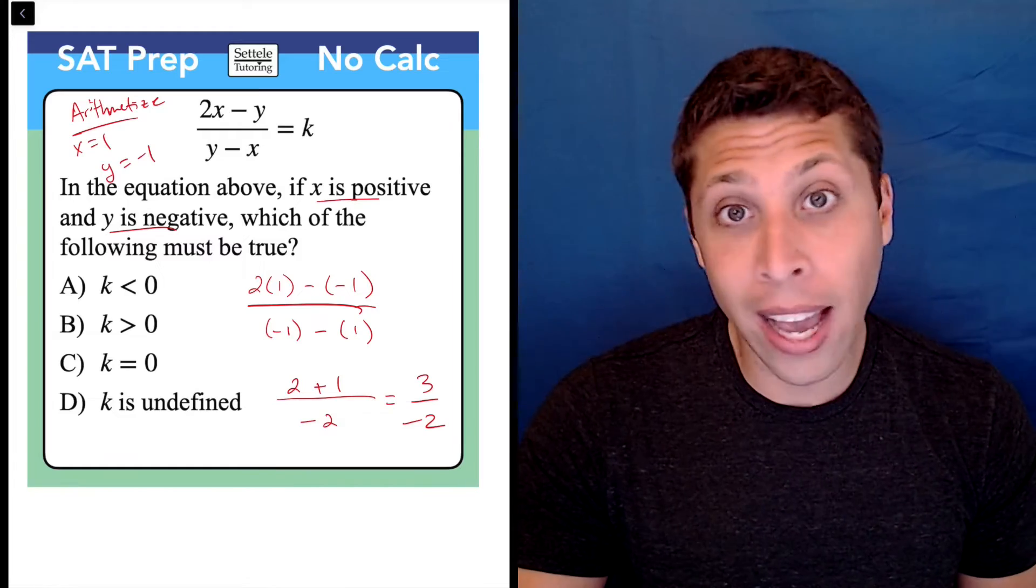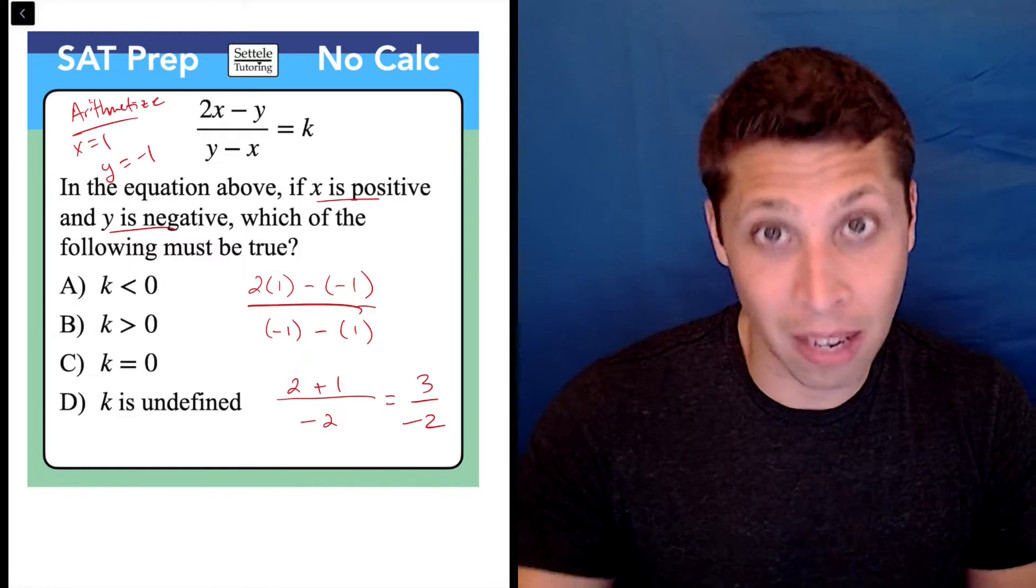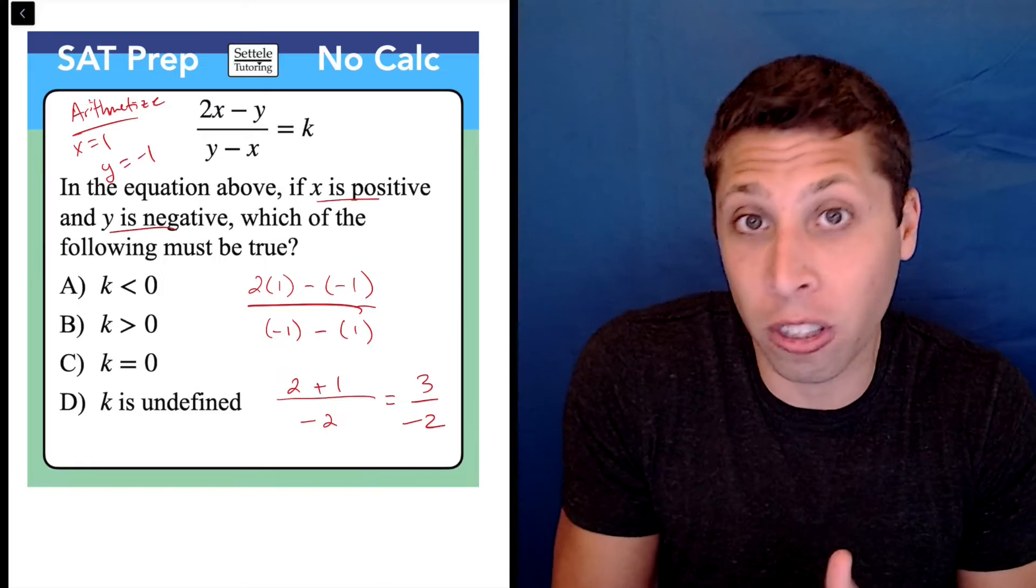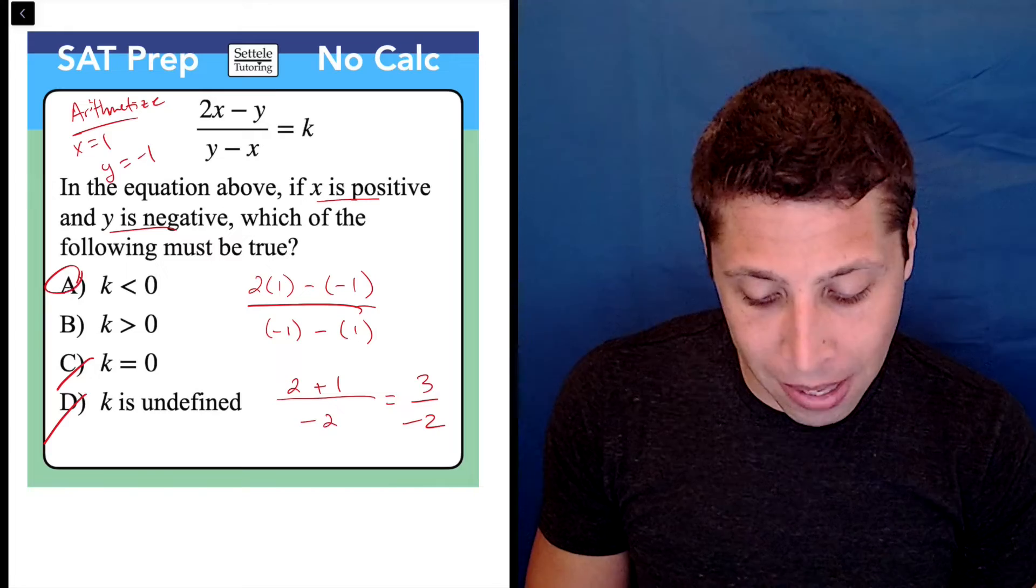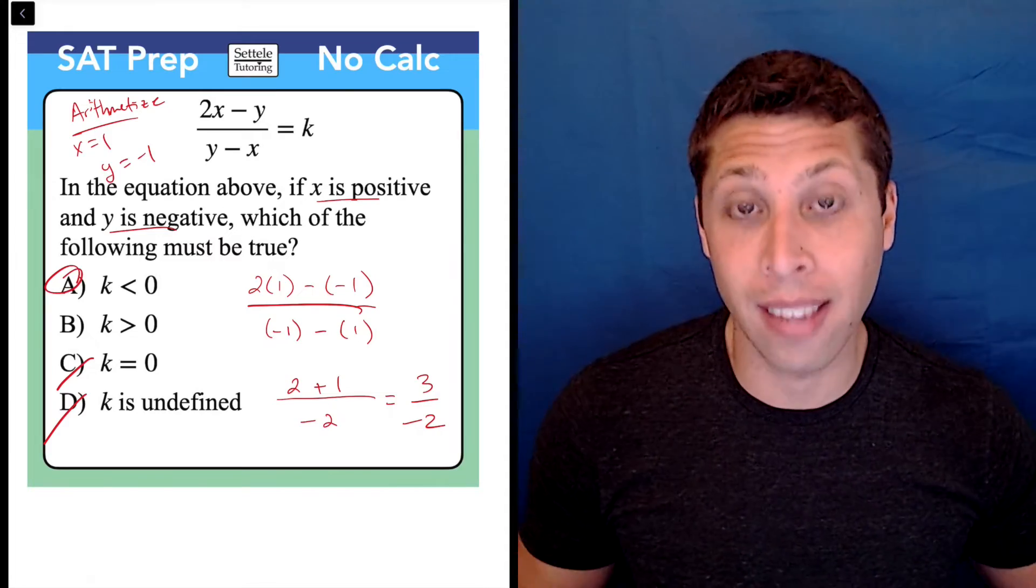Now what does that mean for me? Well, if I look at the answers for k, I don't really care what k is specifically supposed to be. It's all just about positives and negatives, right? It's not zero. It's not undefined. And so if it's a negative number, that means k is less than zero. So choice A is the answer.